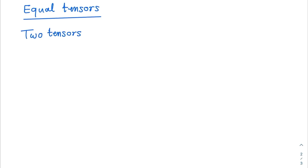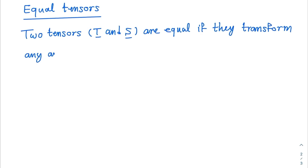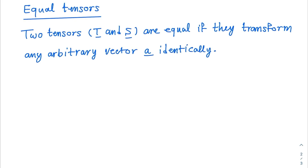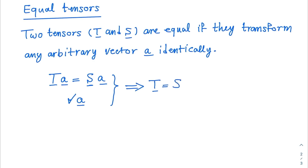Two tensors T and S are equal if they transform any arbitrary vector A identically. In other words, if T of A equals S of A for any arbitrary vector A, then tensors T and S are equal.